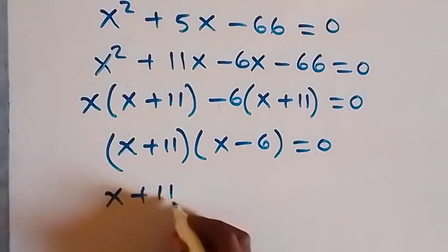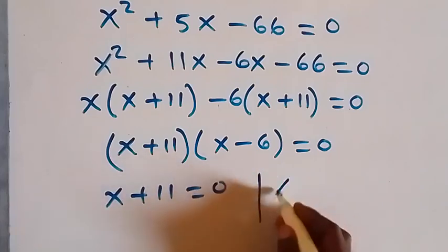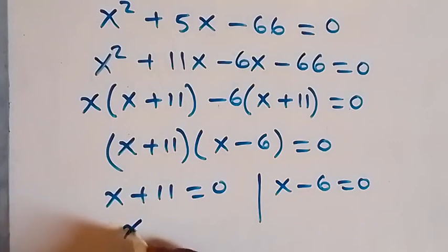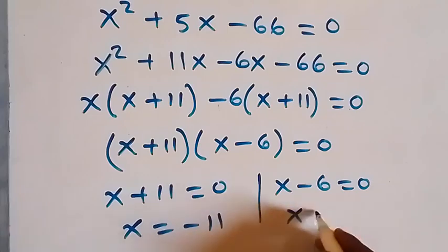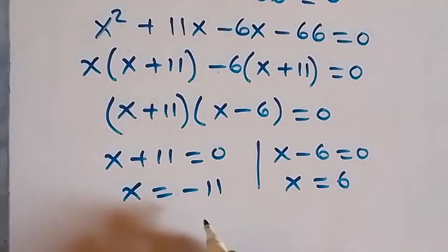The two cases are x plus 11 equals zero or x minus 6 equals zero. On this side x equals minus 11, and on this side x equals 6. We have a negative number, and x in this case cannot be negative, so this is not possible